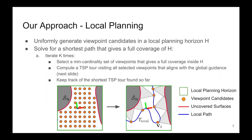Here is a closer look at the local planning process. We define a local planning horizon surrounding the robot. Within this horizon, viewpoint candidates are uniformly generated in a lattice pattern. Among all the viewpoint candidates, we find the shortest possible path that can fully cover the areas within the local planning horizon. This is done by iterating the following steps: first, we select a minimum cardinality set of viewpoints that gives full coverage within the local planning horizon. We then compute a TSP path that visits all the viewpoints and connects with the global path. After a number of iterations, we keep the shortest path found so far. The number of iterations is a parameter that can be set according to the time and computation budget.